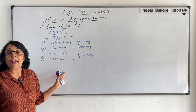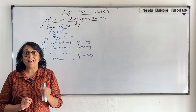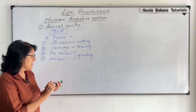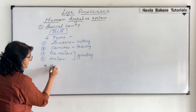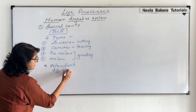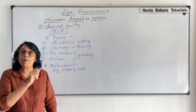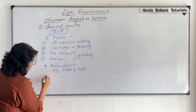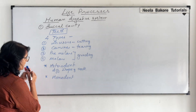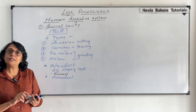So we have four different types of teeth with different shapes and different functions. When an animal or organism has different types of teeth based on their shapes and functions, they are called heterodont. Heterodont means different shapes of teeth. There are some animals who have all teeth of the same type — they are called homodont. We are heterodont.